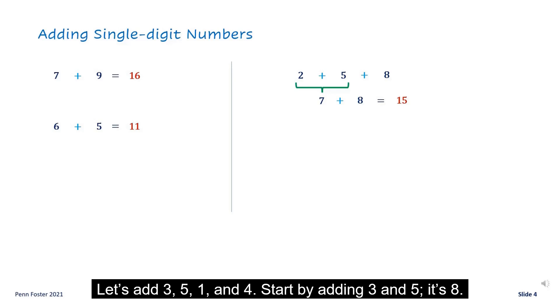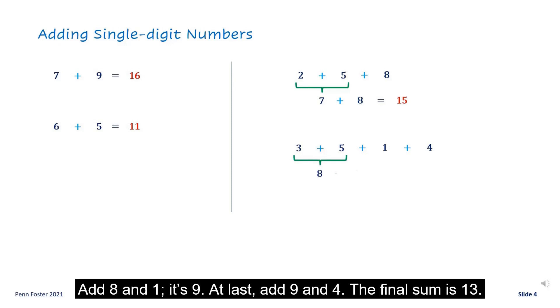Let's add three, five, one and four. Start by adding three and five. It's eight. Add eight and one. It's nine. At last, add nine and four. The final sum is thirteen.